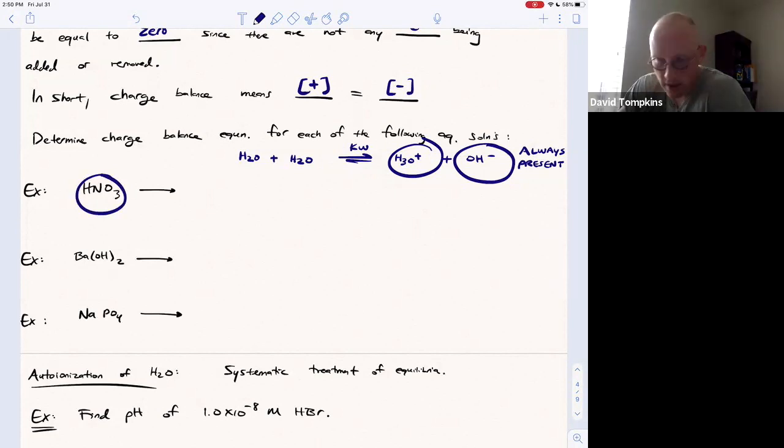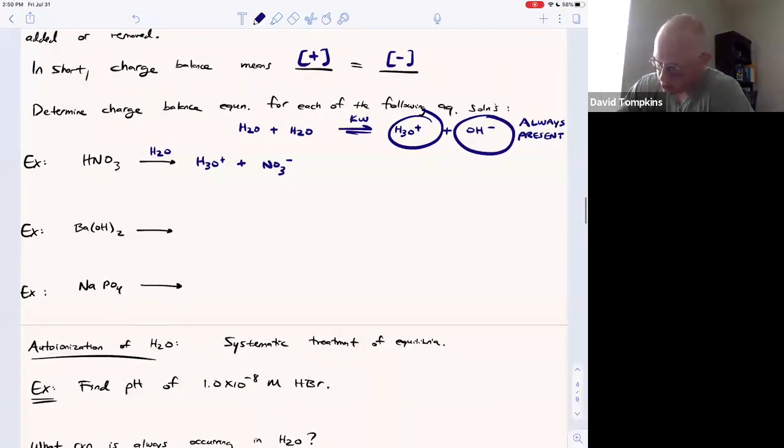Here we have nitric acid, HNO3, that's going to dissociate with water to give hydronium and nitrate. So the cations in this solution are hydronium. That's the only one. It's coming from nitric acid. It's also coming from a small part due to water's dissociation.